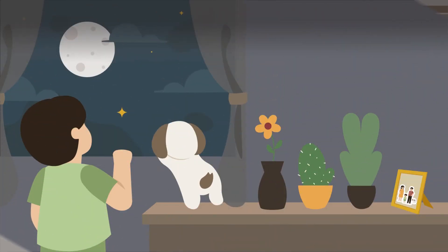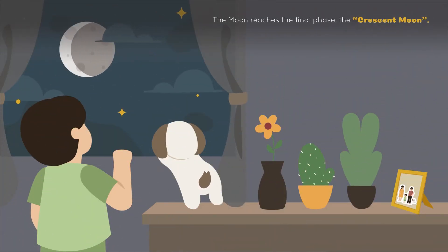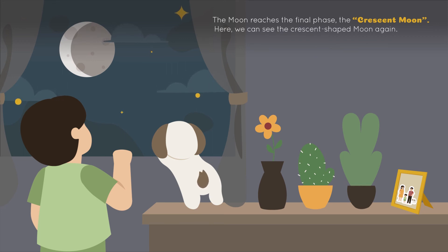The moon reaches the final phase, the waning crescent. Here, we can see the crescent-shaped moon again.